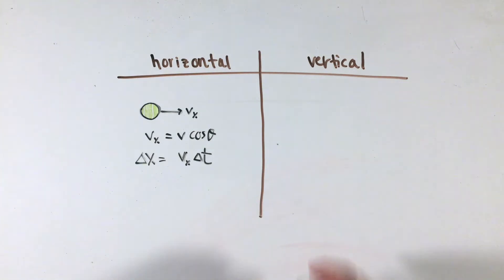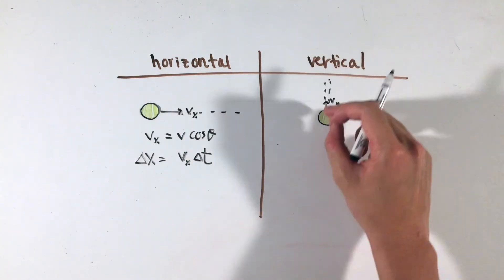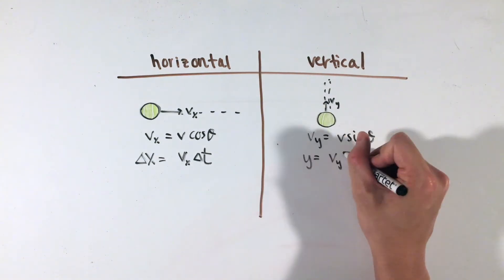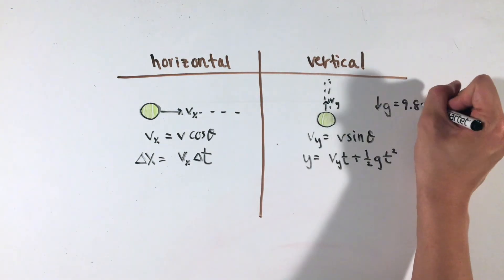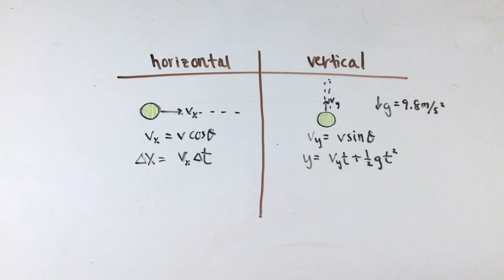Similarly, the vertical motion is simply a constant acceleration problem like our 1D cases, with the acceleration in this case being gravity, or 9.8 meters per second squared. The most important thing with this value is the negative sign often associated with it, as it's directed downwards, so make sure that all the velocities directed up are positive and down are negative as well.